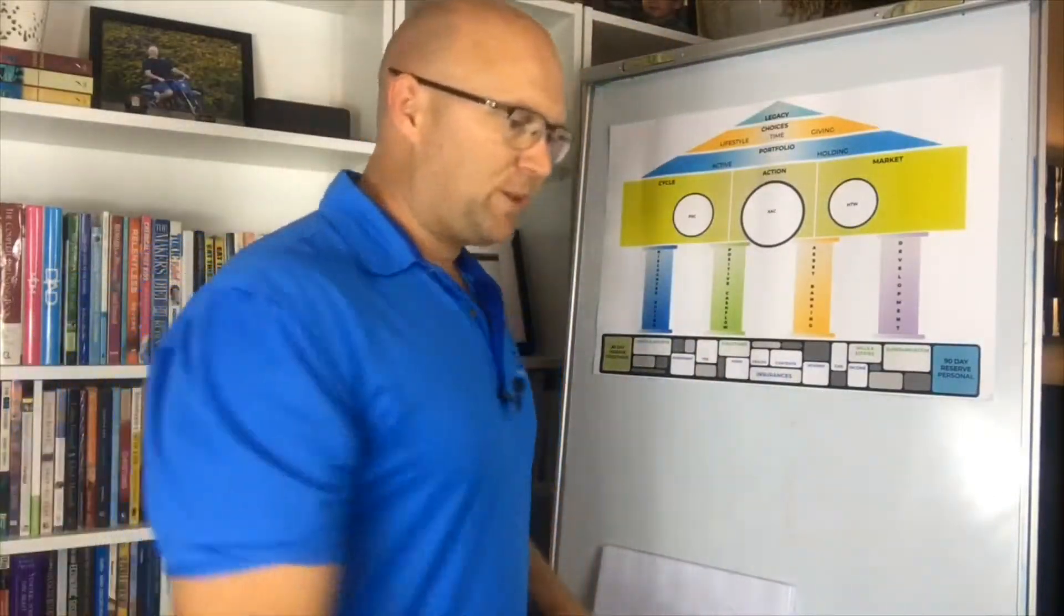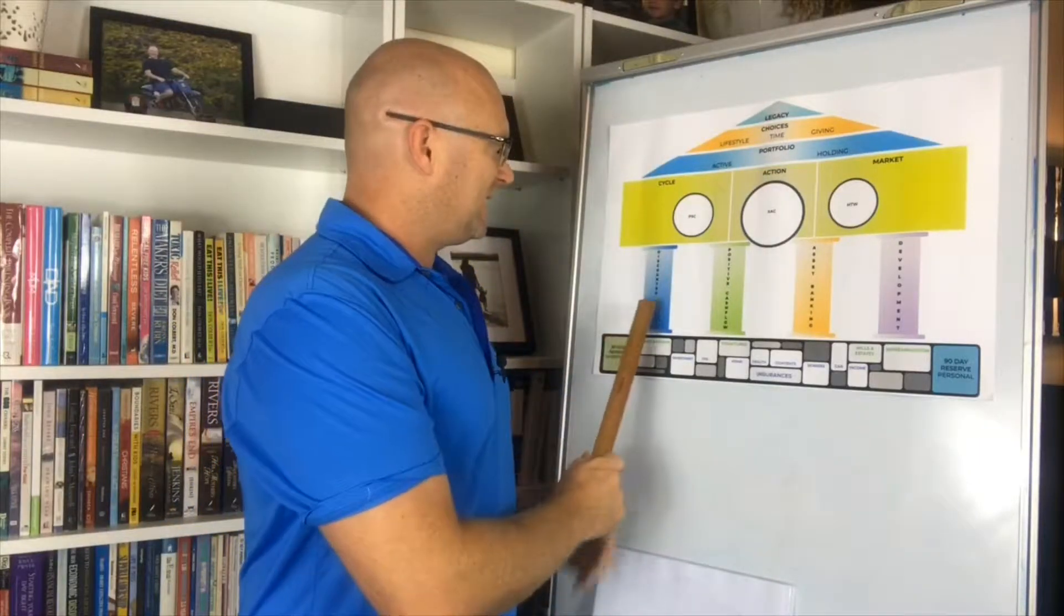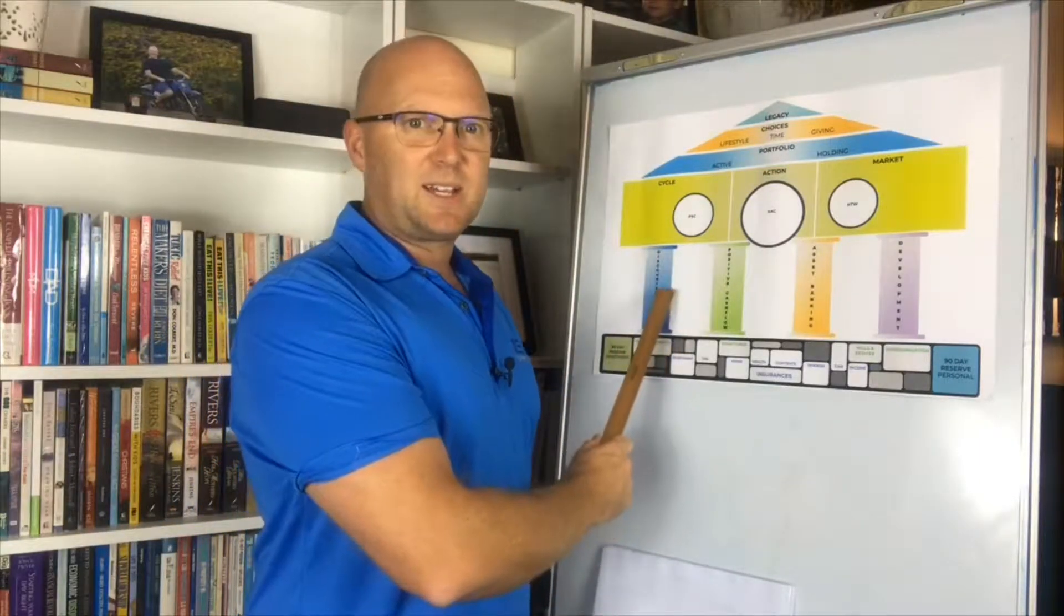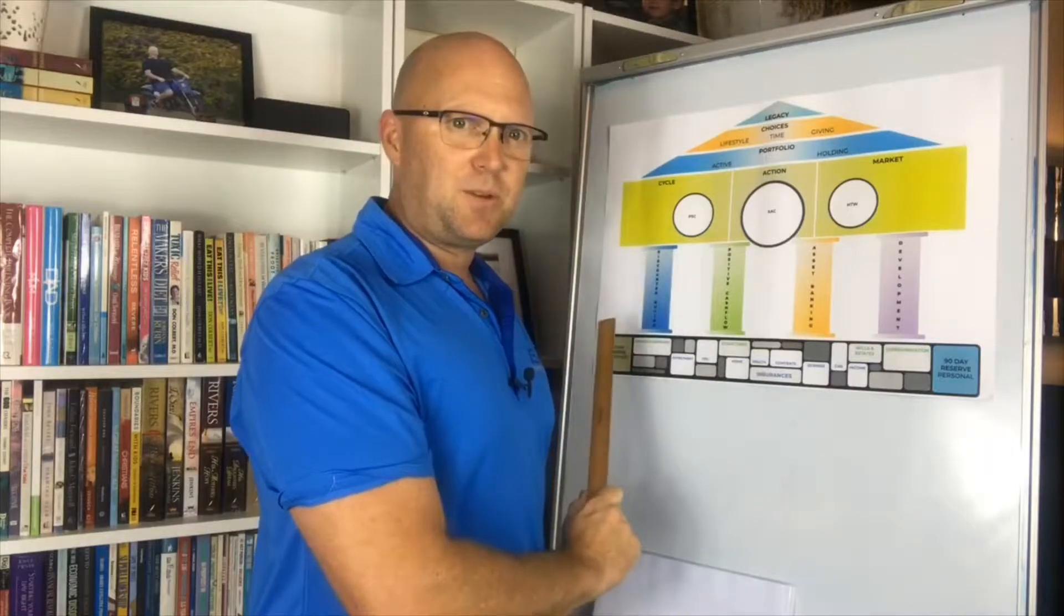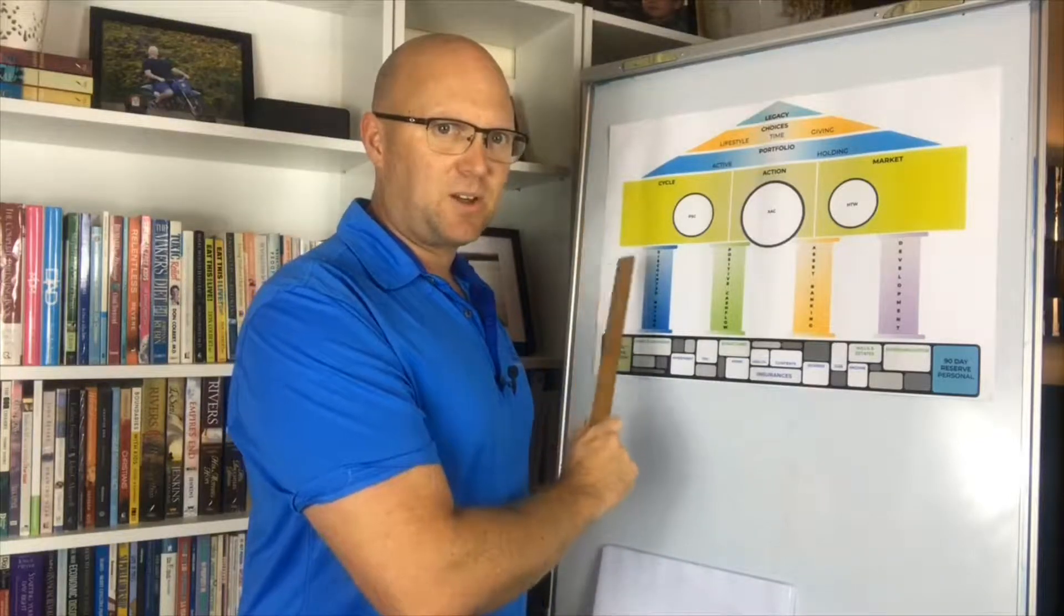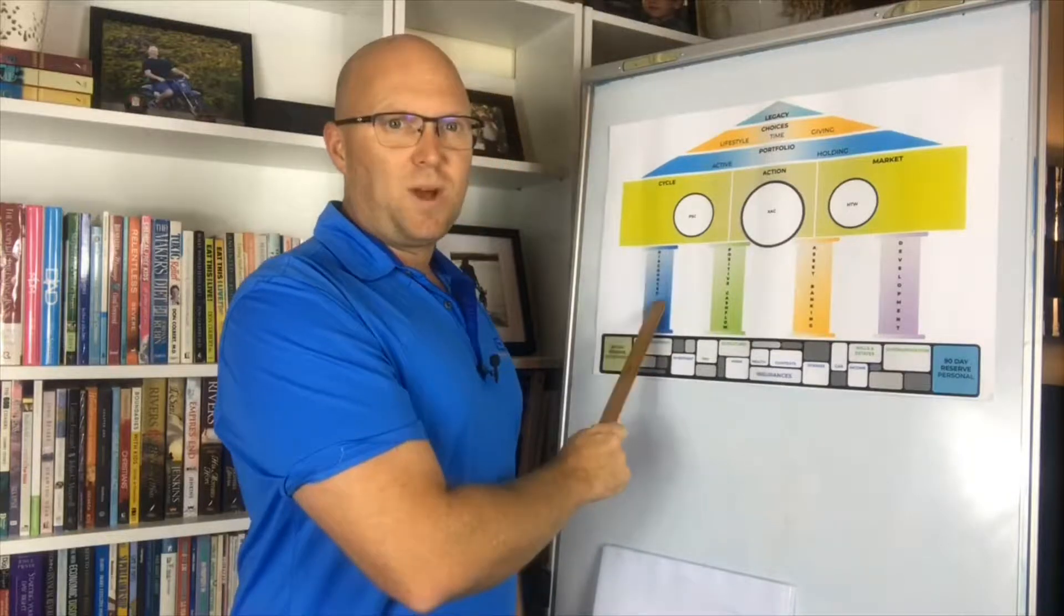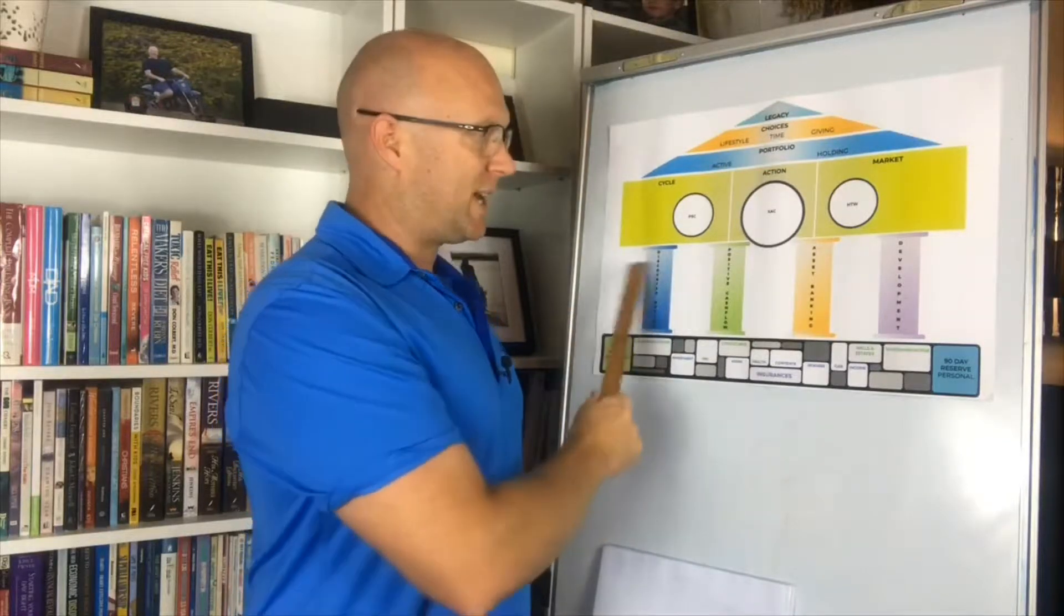So why do we choose those four pillars? Well, firstly, we should always buy at a discount. Every time we want to buy a property, we want to get the best price and the highest discount possible. And that is one section in the property cycle where we can actually transact.